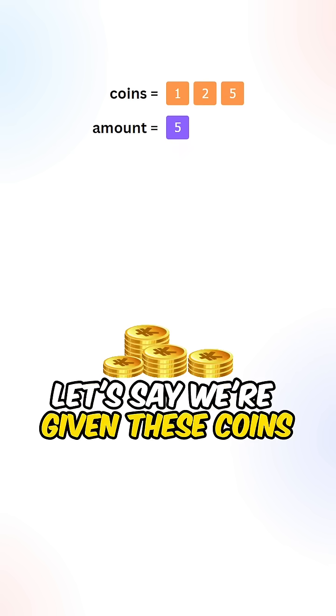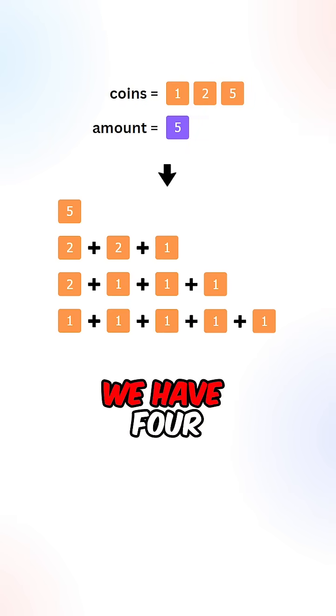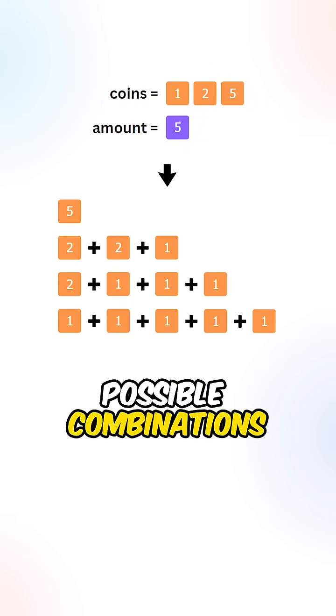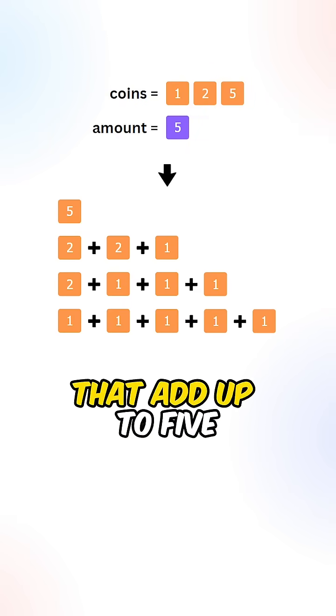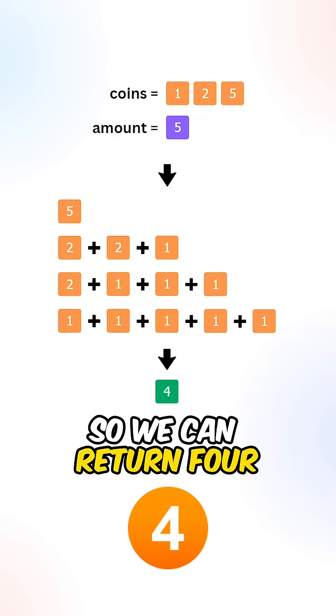Let's say we are given these coins and a total amount of 5. We have 4 possible combinations that add up to 5, so we can return 4.